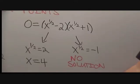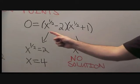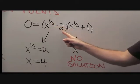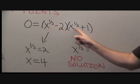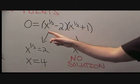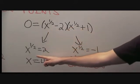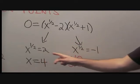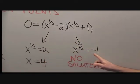We factored the previous expression to read x to the 1/2 minus 2 times the quantity x to the 1/2 plus 1. Now solving this equation equals 0 means either x to the 1/2 is equal to 2 or x to the 1/2 is equal to negative 1.